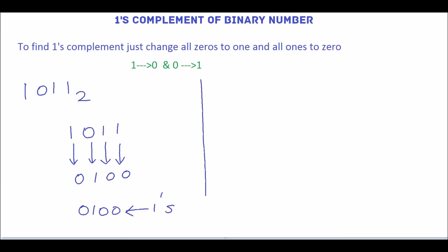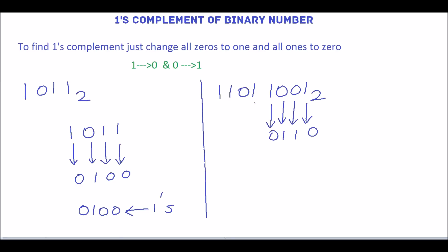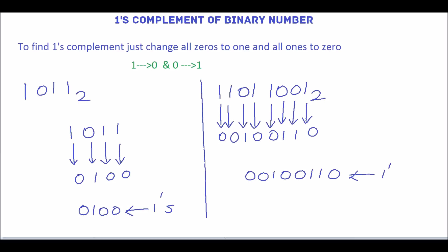We will see one more example. We have to change 1 to 0, 0 to 1, 0 to 1, 1 to 0, then 1 to 0, 0 to 1, 1 to 0, 1 to 0. So, 0 0 1 0 0 1 1 0 is the ones complement of the given number.